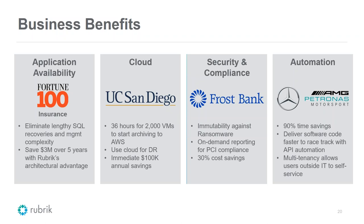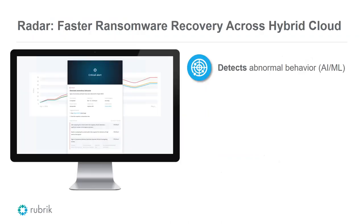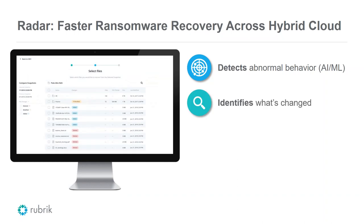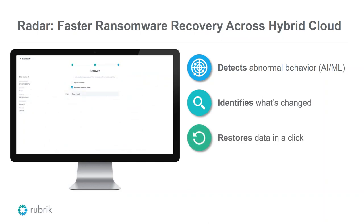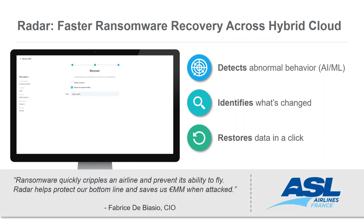The Radar story around ransomware is really powerful too. Customers like AMG Petronas have orchestrated pretty much all of their data recovery — protecting all the race data — and Frost Bank was very concerned about ransomware and has found real value in our data sets and savings there. With Radar, we can detect data set changes using machine learning, show you what changed in which backup, and with one click restore in-place or throw it to another location for quarantine and analysis. ASL is a big public reference for this capability.